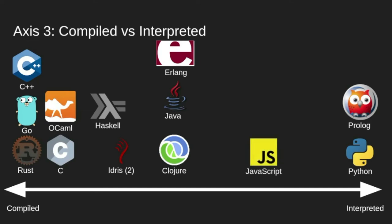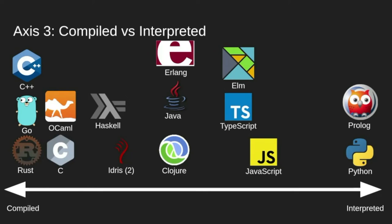JavaScript is a bit further toward interpreted because you don't compile JavaScript per se — it's sent out as source. But pure interpretation is not fast enough, so what V8, Gecko, and other JavaScript engines do is interpret first, then compile the frequently-run parts on the fly to native code — that's JIT compilation, just-in-time compilation. TypeScript and Elm I put a bit more to the compiled side, because you first use a compiler to compile them to JavaScript, and then V8 does a JIT compilation to native code.